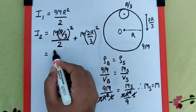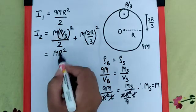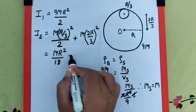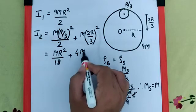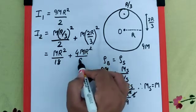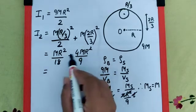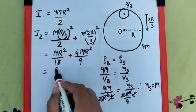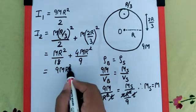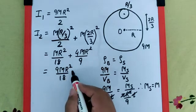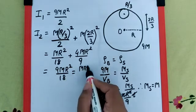If we simplify this, it is going to be mr²/(9×2), which is 18, plus 4mr²/9. If we simplify this further, it is going to be 9mr²/18, which is nothing but mr²/2.